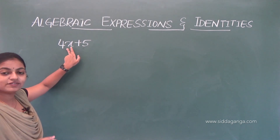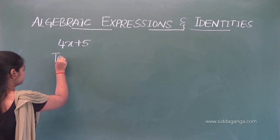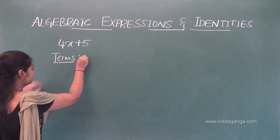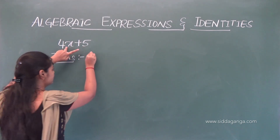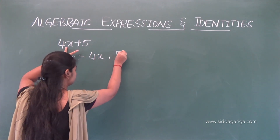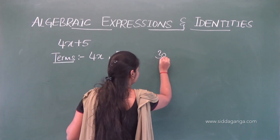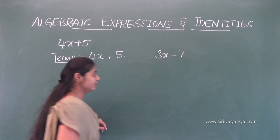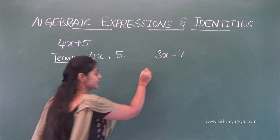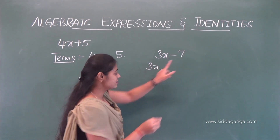Consider an expression 4x plus 5. There are two terms in this expression: they are 4x and 5. Another example: 3x minus 7. So in this expression there are two terms which are 3x and minus 7.